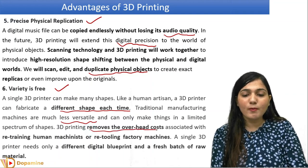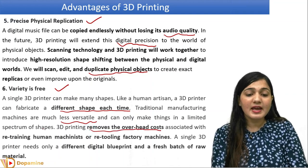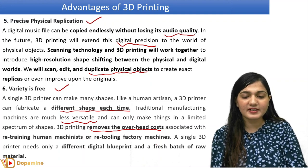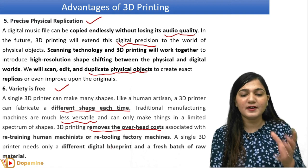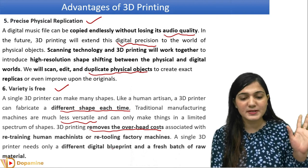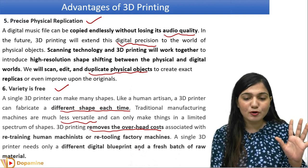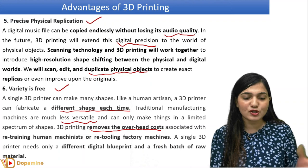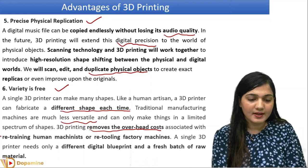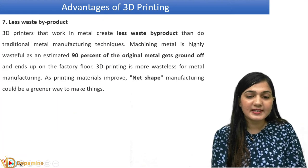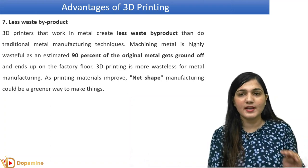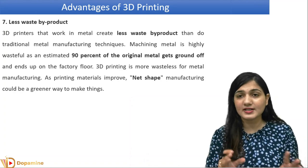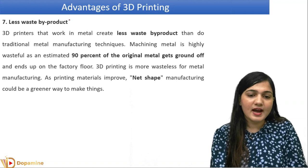From the 3D printer, overhead costs are reduced — retraining human machinists and retooling factory machines are not necessary. We can also have different shapes and sizes with different digital blueprints. We will get a fresh batch of raw materials, and we can change the material and use it on the same structure as well. If I have a design and I need to change the material, I can easily do that.